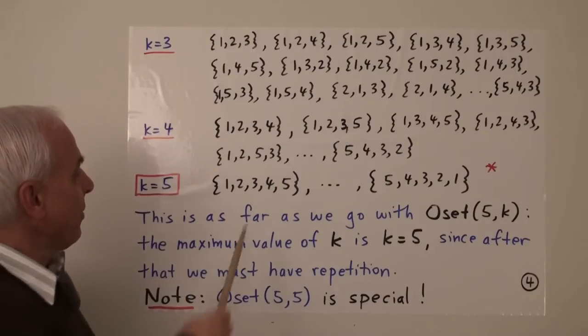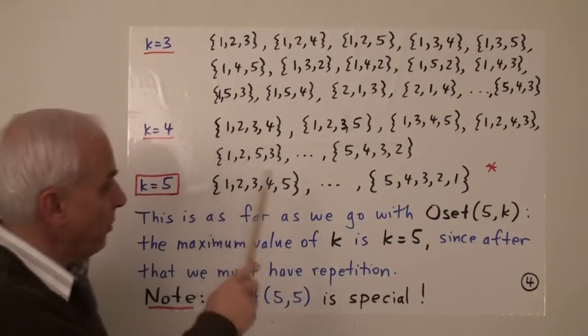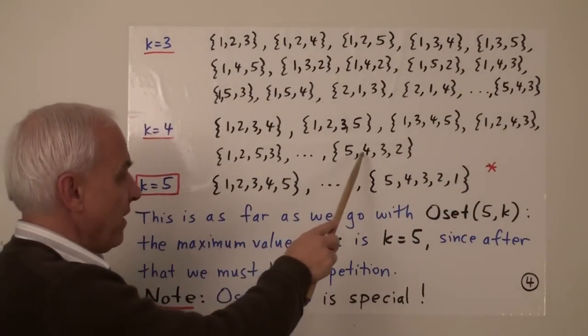k equals 4. We have {1,2,3,4}, {1,2,3,5}, {1,3,4,5}, {1,2,4,3} and so on. We keep going until eventually we get to {5,4,3,2}.